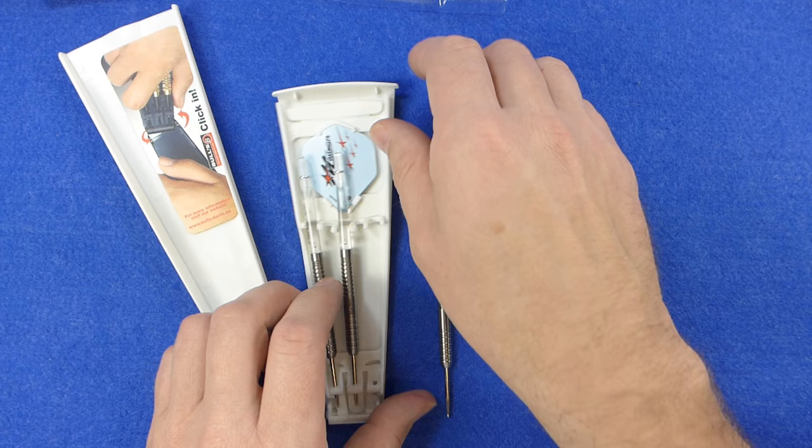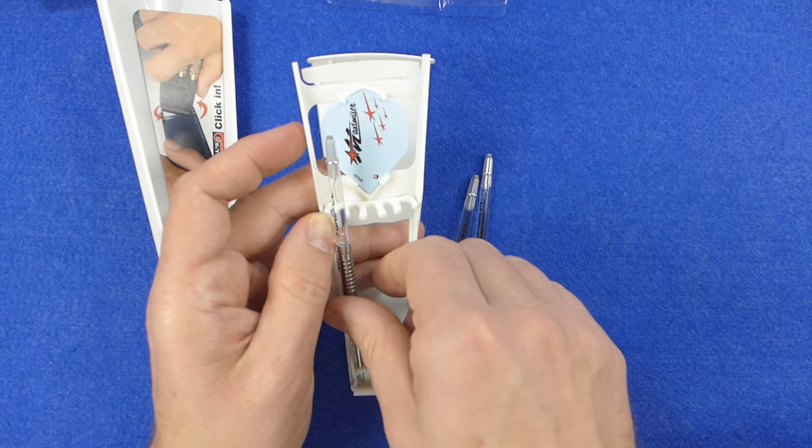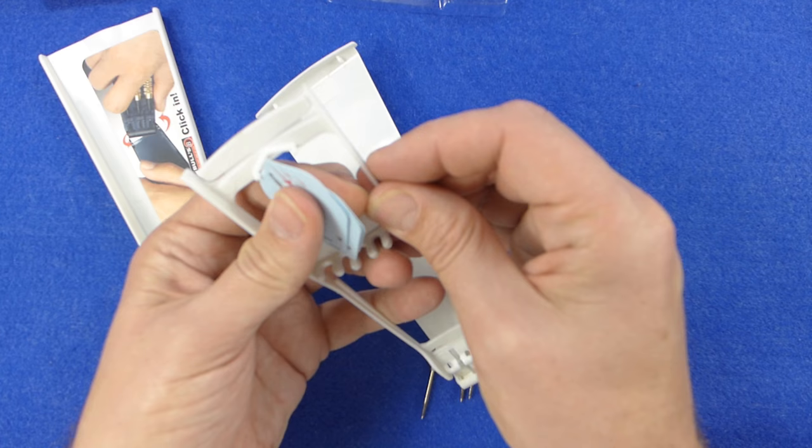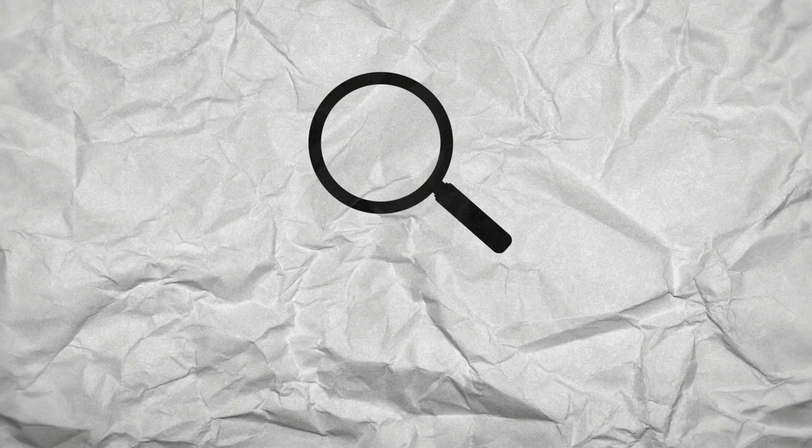They look to be sharp polycarbonate stems, so you can get them all out without breaking anything. Quite securely fastened. The flights are standard shape maximizer with a nice graphic on them. Quite a nice flight actually. So that's what you get in the box.